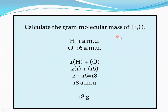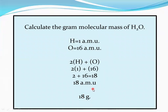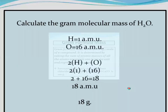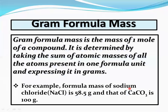To calculate gram molecular mass of water: use the same method as for molecular mass, then replace AMU with grams. So instead of 18 AMU, the gram molecular mass of water is 18 grams. It becomes the gram molecular mass by simply replacing AMU with grams.